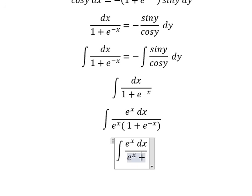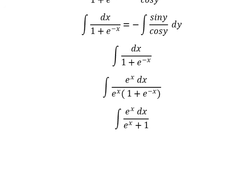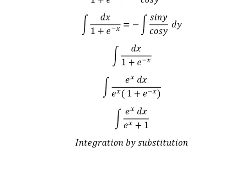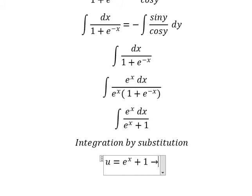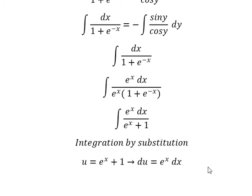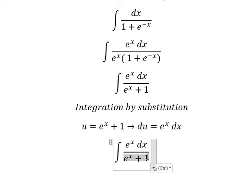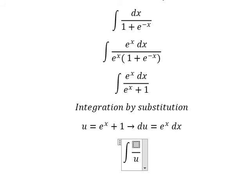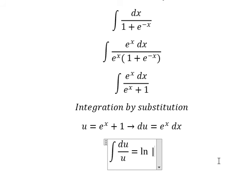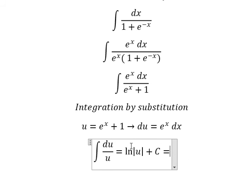e^s multiplied gives us e^s + 1 in the denominator. Now we use integration by substitution: let u = e^s + 1. Taking the derivative of both sides, du = e^s ds. We substitute, and the integral becomes ln|u|, plus constant C.